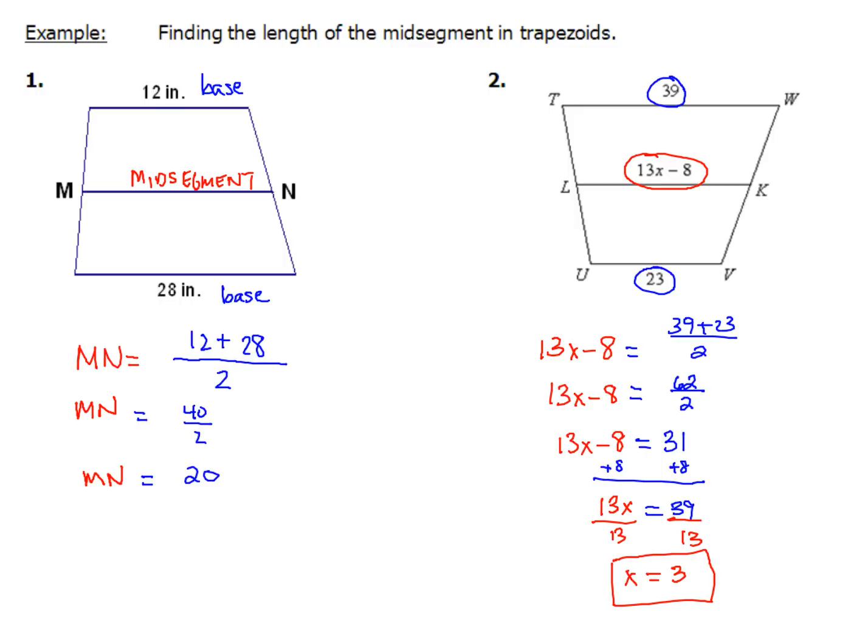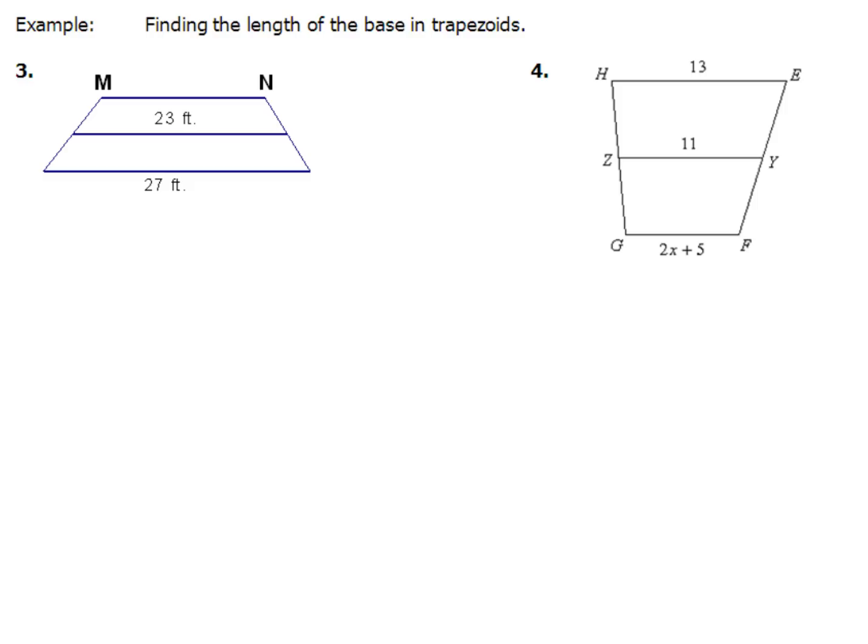Now, we're going to take a look at two other examples. Here, for examples 3 and 4, this time we've got to find the length of the base in the trapezoids. So in this case, here, we've got the mid-segment. I'm just going to abbreviate that MID, and I'm going to go ahead over and do the same thing in example number 4. Both of those are the mid-segment pieces that I have now. MN is one of my bases, as is this bottom piece right here.